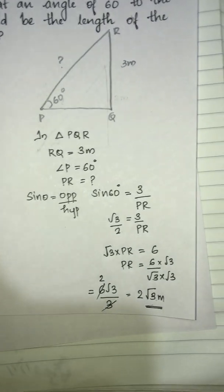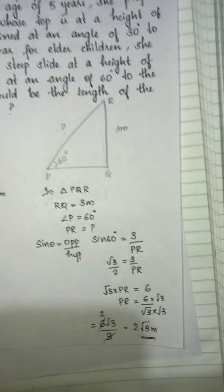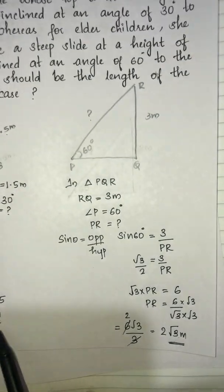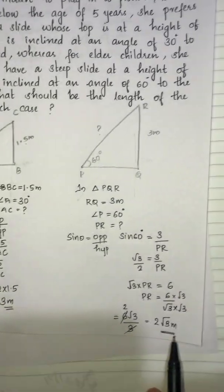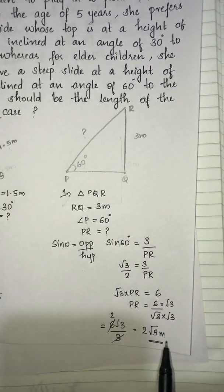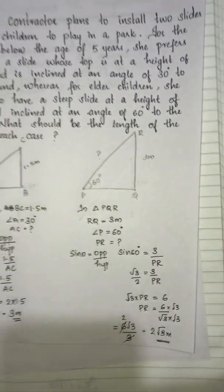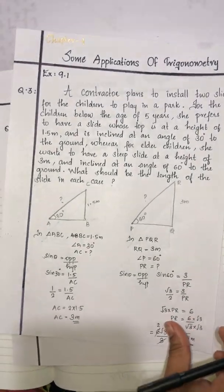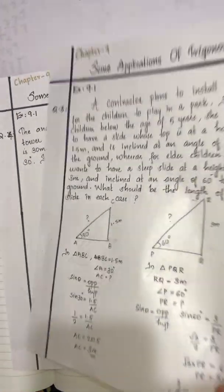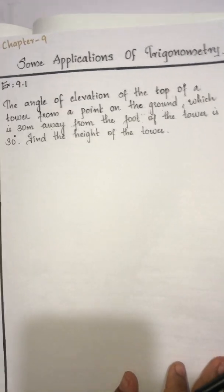So in both cases: the first case, the slide length is 3 meter, and the second case, the slide length is 2 root 3 meter. Now the next question — question number 4 from exercise 9.1.